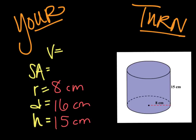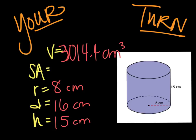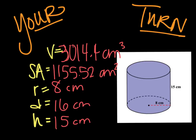The radius, diameter, and height are identified for you — that should have been the first thing to do. Starting with volume: π times r, so 8 times 8 times 15 gives you 3,014.4 centimeters cubed. The surface area is a bit longer — take your circumference, which is π times 16, times 15, plus 2 times your area, so 2 times 3.14 times 8 times 8. Chunk it together before you add, and you get 1,155.52 centimeters squared. If you got it right, give yourself a score; if not, try and fix it.